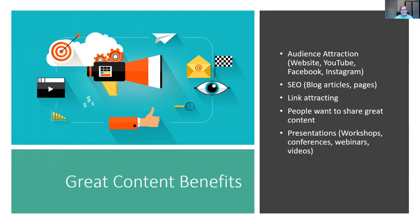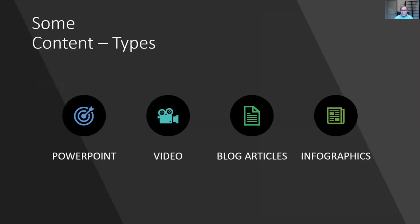Another form of great content is presentations, workshops, conferences, webinars, and videos. Common content types that get a lot of traffic include PowerPoints, videos, YouTube, blog articles, and infographics — all of which have come up during these presentations. All of these kinds of content are useful: they can bring people to you, engage your audience, and help you connect in the ways you want.